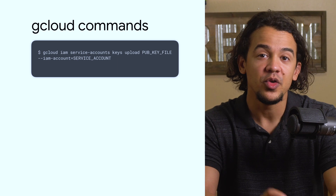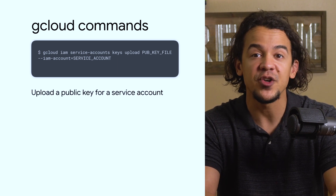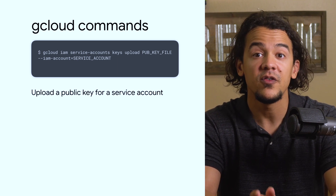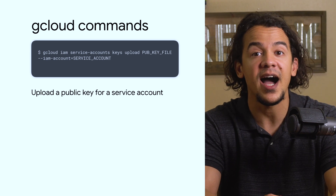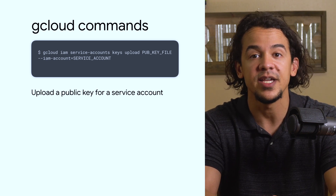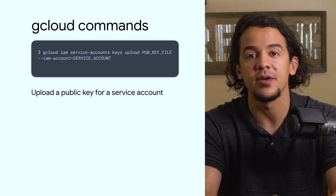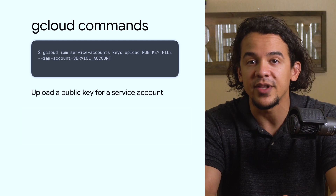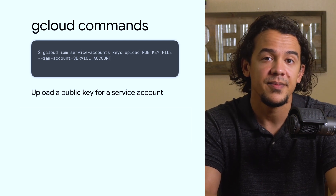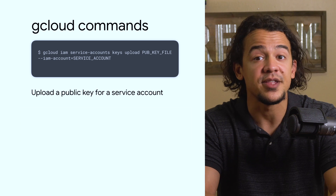So, how do we generate new service account keys? If you're using Google Cloud Console or the gcloud CLI, you have two ways of creating a key for your service account: uploading your own or having Google generate it for you. If you want to upload your own key, you'll use `gcloud iam service-accounts keys upload`, followed by the file with your public key, and the `--iam-account` flag to indicate the service account you want to use it for. You won't need to upload the private key — it's up to you to keep it secured, and it'll be used to access your project as a service account.